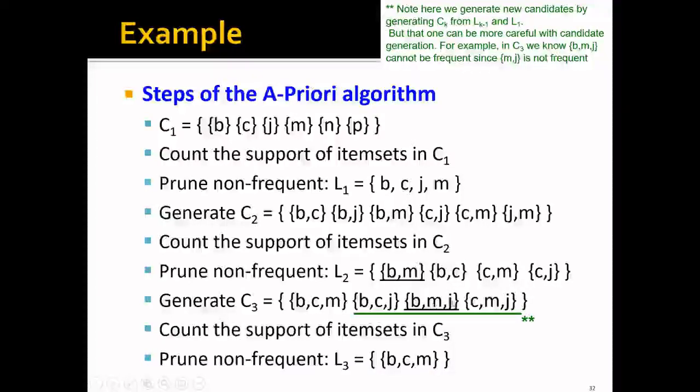And if you are more careful, you can find that in this B, M, J, although the B, M actually is inside the frequent pair set, but M, J is not. That means the B, M, J will never have a support higher than the threshold. That means if you are aiming and optimizing this candidate generation process, we can actually prune this set beforehand.